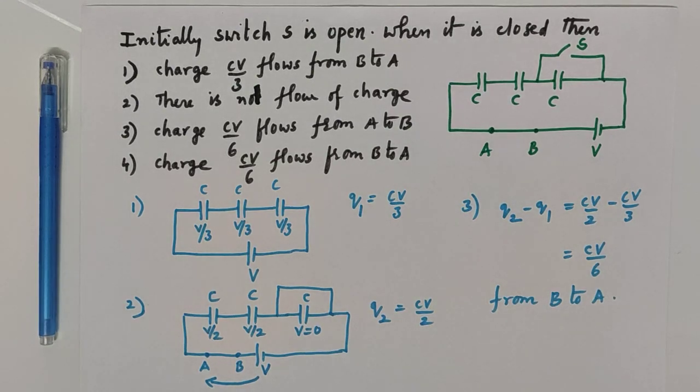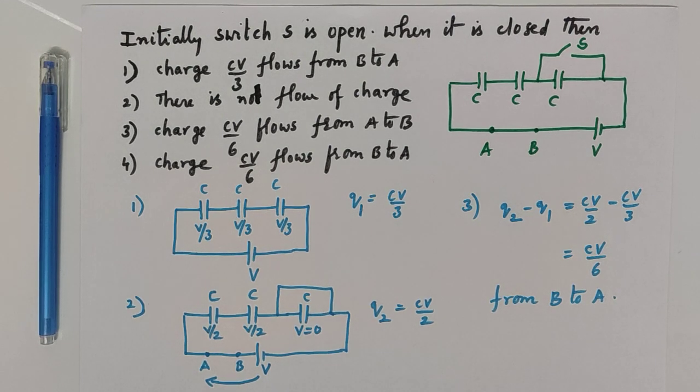Let us solve a question from capacitors. Three identical capacitors are connected in series to a battery and here there is a switch. The question is, when the switch S is closed, does the charge flow from A to B or from B to A, and how much of charge flows from A to B or B to A.